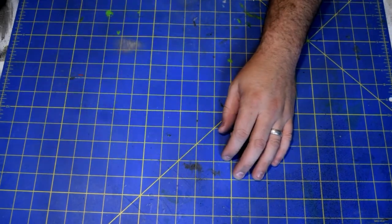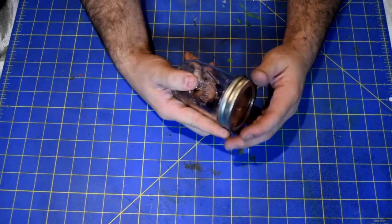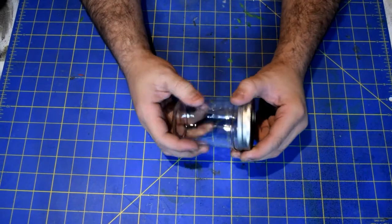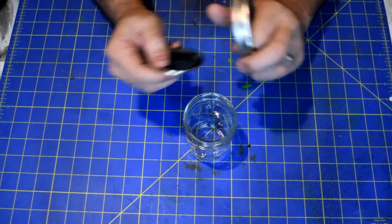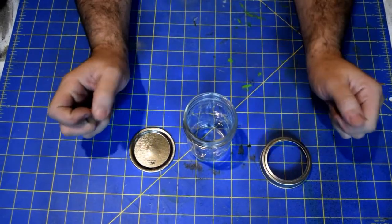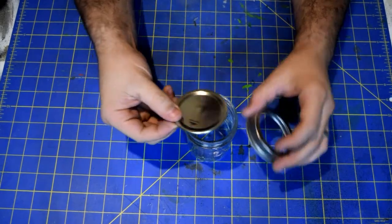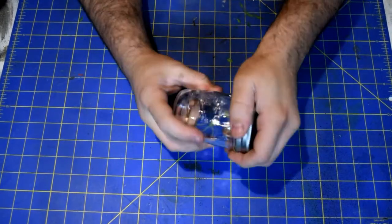So to start off we're going to give you guys a list of supplies that you need. First you're going to need a small mason jar. You want to make sure that this mason jar does have the collapsible lids so that way you can make sure everything's all set and good to go. We will be using that later on in the project.